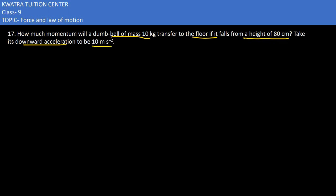So what is given here? m is 10 kg. The second thing is s is given to us, 80 centimeter. Convert centimeter into meter, so 80 over 100 would be there, so you would get 0.8 meter. Then we have the acceleration, which is 10 meter per second square.